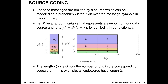We can talk about the length of a binary string using notation L(X) to count the number of bits in a code word. I'll often use a visualization where the x-axis shows the number of bits used in the code word, and the y-axis shows the probability of that symbol in our source distribution.